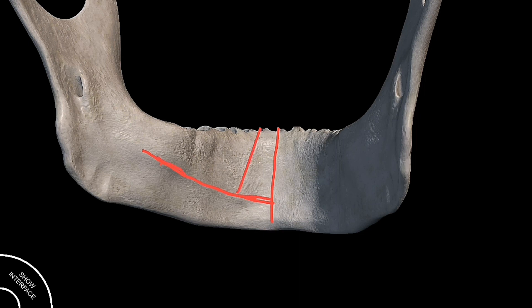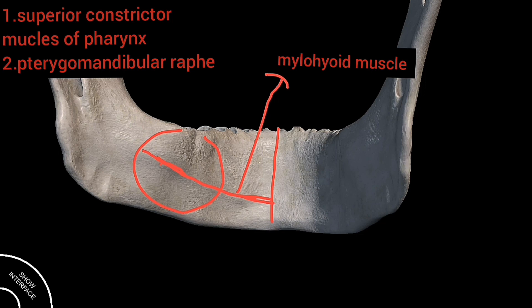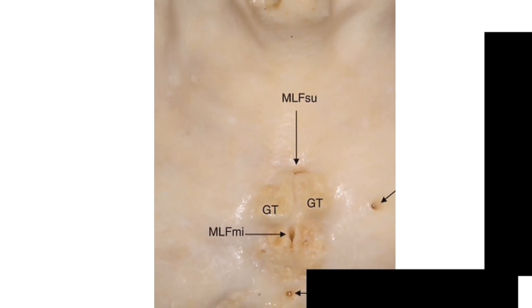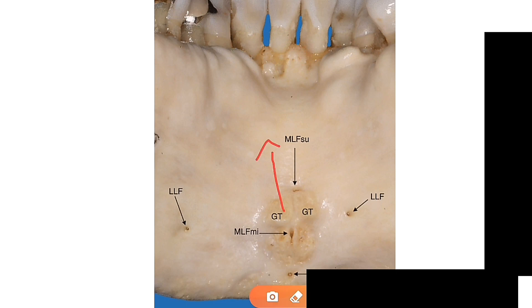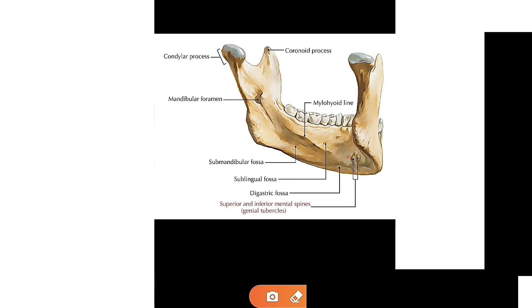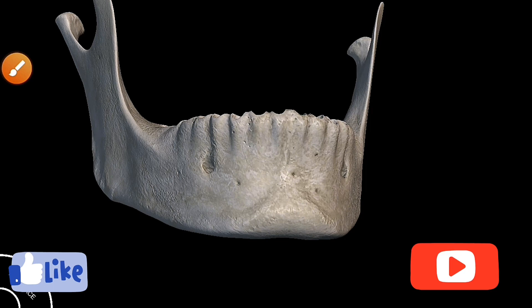The mylohyoid line extends from the lower part of the symphysis, running upward and backward, and it gives origin to the mylohyoid muscles. The posterior part of the mylohyoid line gives attachment to a small part of the superior constrictor muscle of the pharynx and the pterygomandibular raphe. The superior genial tubercle gives origin to the genioglossus muscles, and the inferior genial tubercle gives origin to the geniohyoid muscles.